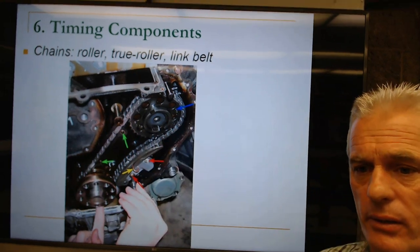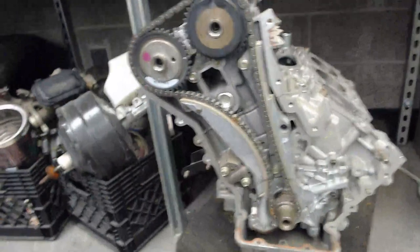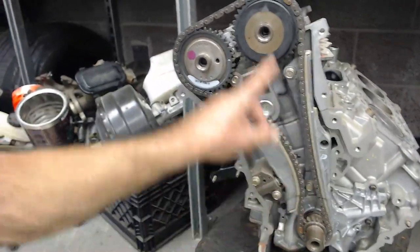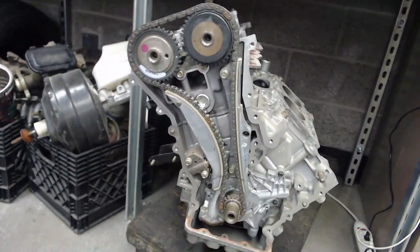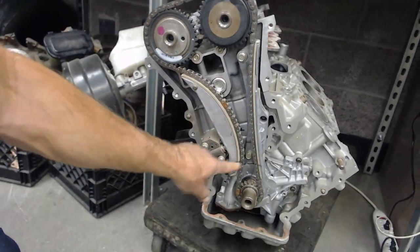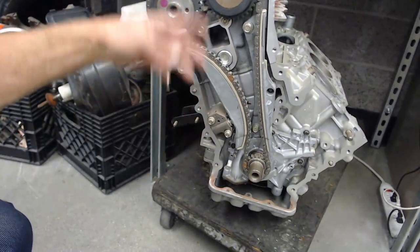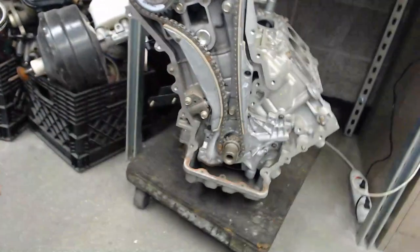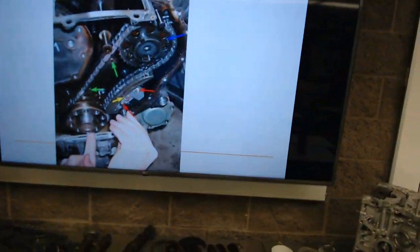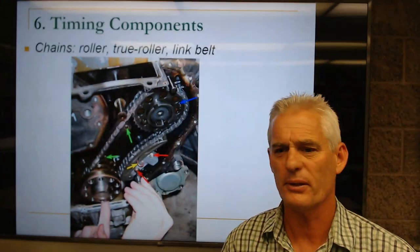Here's a modern car with a roller-type chain, an oil-pressure-activated tensioning system, and guide rails to keep chain slap out. On this overhead cam engine, here's the crankshaft gear — half the size of the cam gear because it spins twice for every one cam revolution. This is a link belt type chain with Teflon-coated guide rails and an oil pressure tensioner. Tension is needed so the chain doesn't slap around and change cam timing.